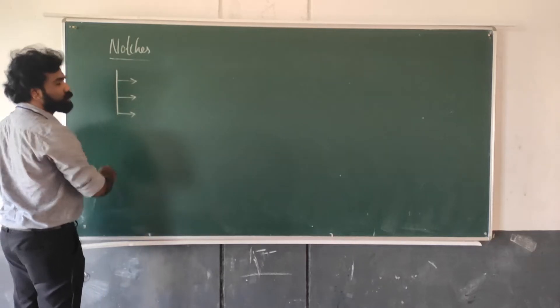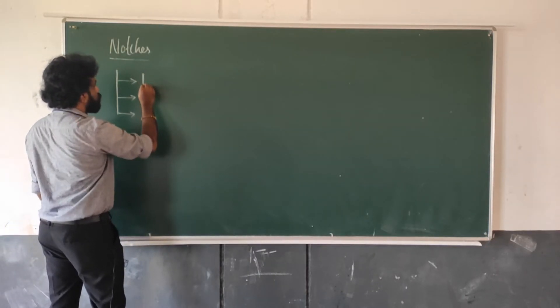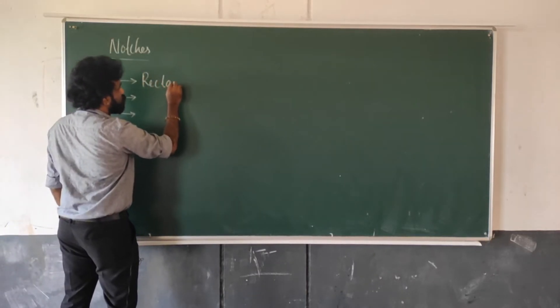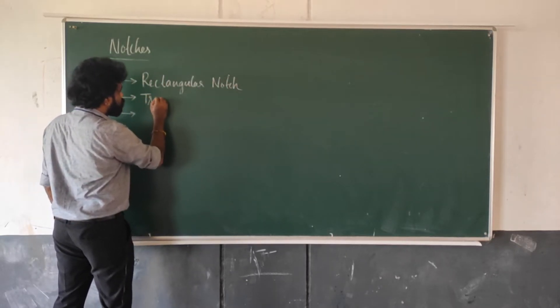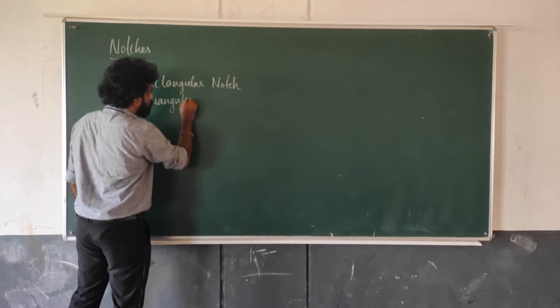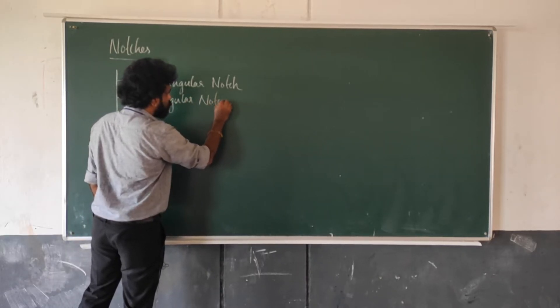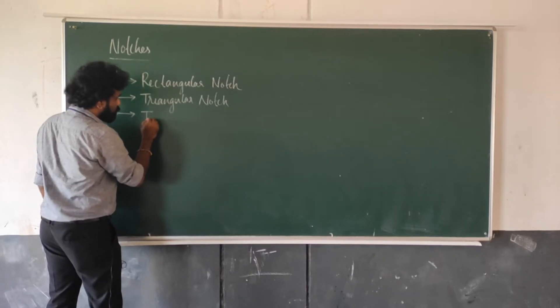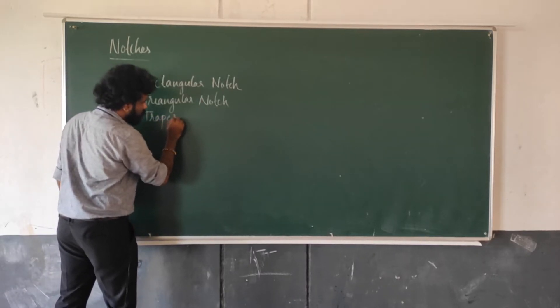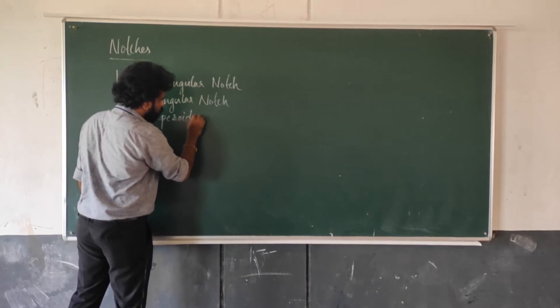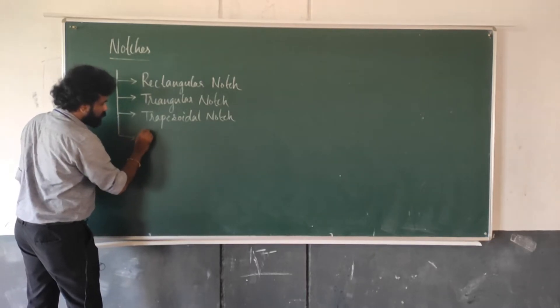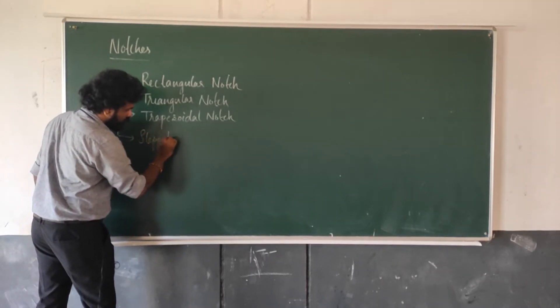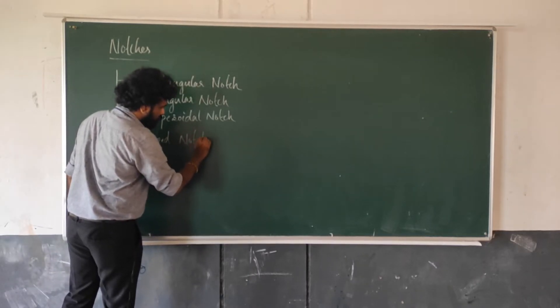Notches are classified as follows: the first classification is rectangular notches, the second classification is triangular notches, the third classification is trapezoidal notches, and the fourth classification is stepped notches.